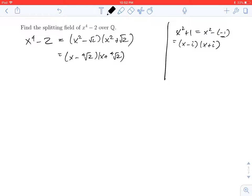So we can do the same thing with x squared plus the square root of 2. I can factor that as x minus the fourth root of 2 times i times, let's make a little room over here.